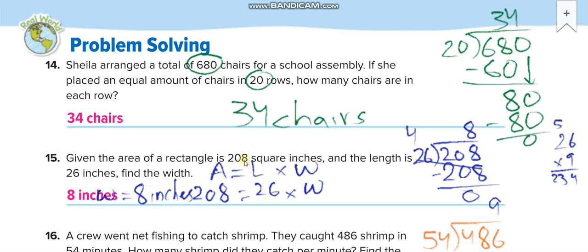Given the area of a rectangle is 208 square inches and the length is 26 inches, we have to find the width. The formula for area is area equals length times width. They give us the area and length, so we need to find width: 208 divided by 26 equals 8, so the width is 8 inches.